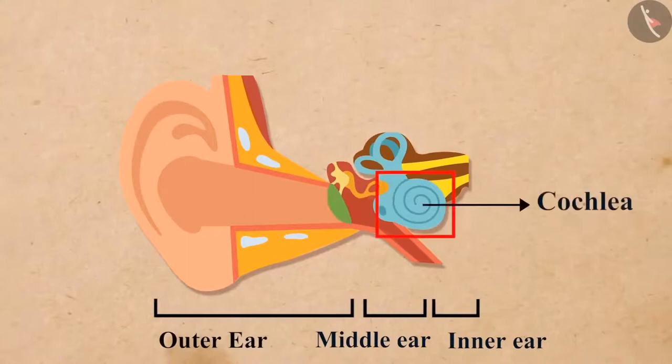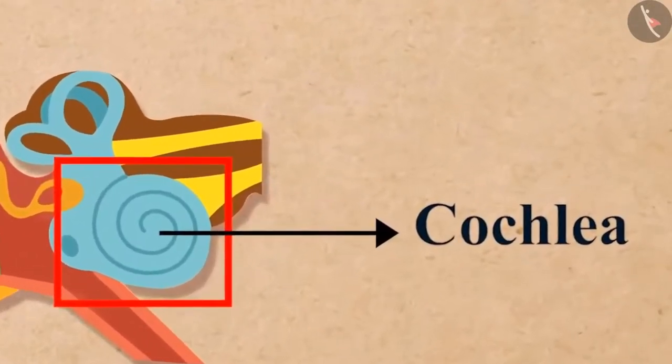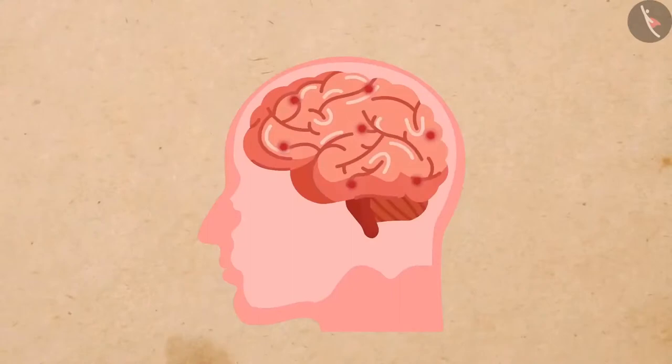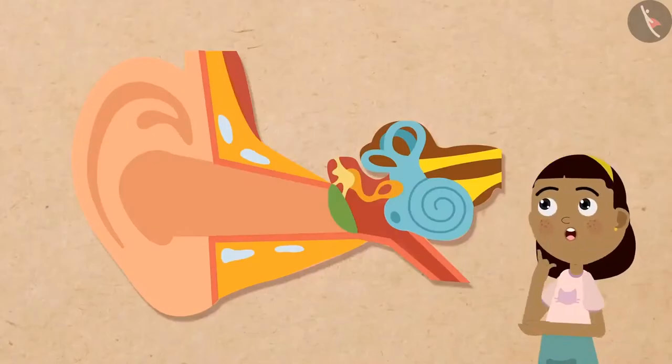The cochlea of the inner ear turns the pressure variations into electrical signals. These electrical signals are sent to the brain through the auditory nerve, and the brain interprets them as sound. And this is how human beings are able to perceive the sound around them.